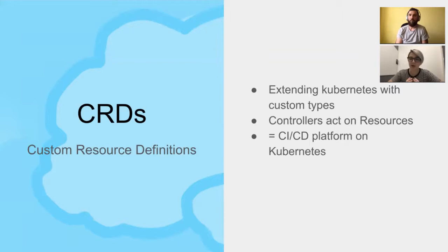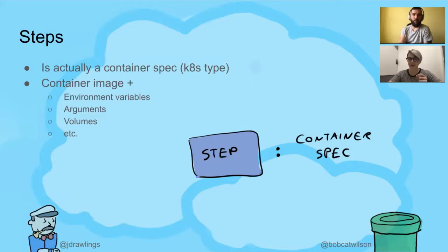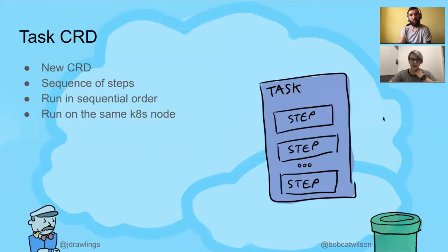The key to understanding how Tekton Pipelines works is that it's built with CRDs — custom resource definitions — a way of extending Kubernetes itself. Out of the box, Kubernetes comes with resources like pods, services, and deployments. With CRDs you can add your own resources and provide controller binaries that act on those resources. Our most basic building block is a step, which is a Kubernetes container spec specifying an image to run along with environment variables, arguments, etc.